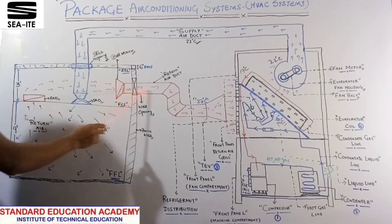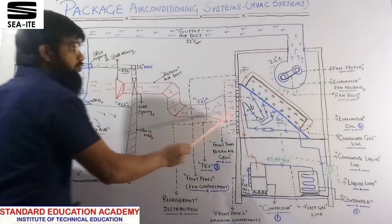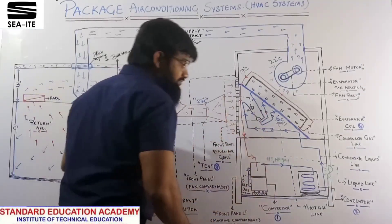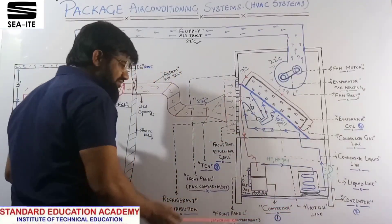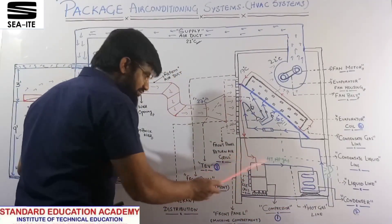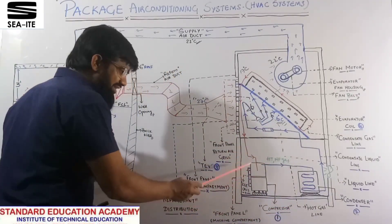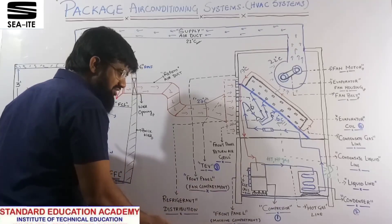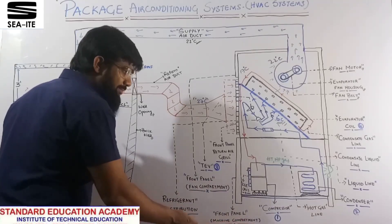This is the return air duct coming back to the machine. This is your compressor section, which is why it is referred to as the machine section or machine compartment.